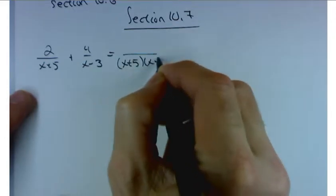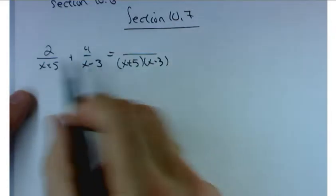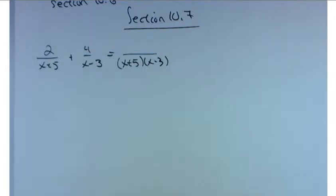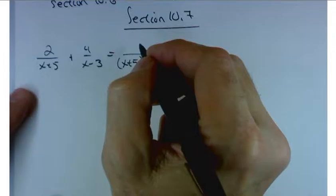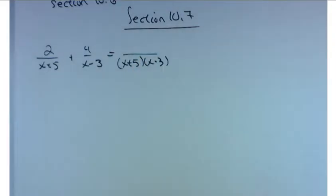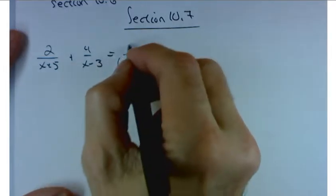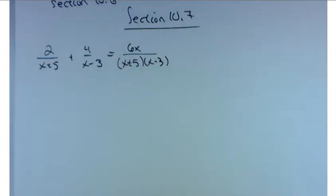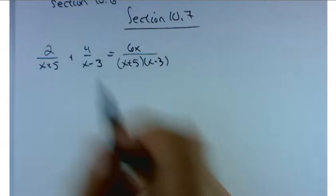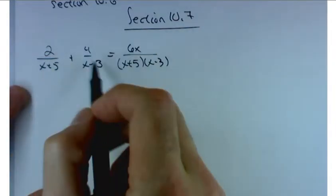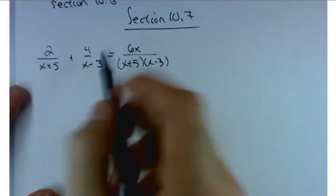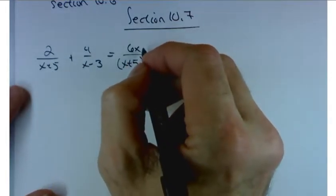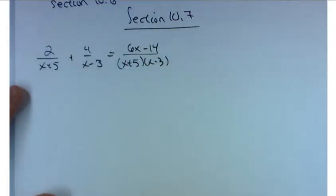And if you take the time to get a common denominator and add these things together you'd end up with 6x minus 1. That doesn't look right. Let's see. The 6x is right. I'm not sure I believe. Let's see. Minus 6 plus 20. I'm thinking maybe minus 14 here. All right.